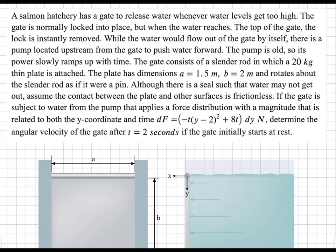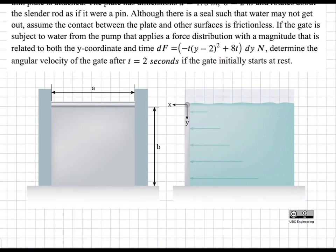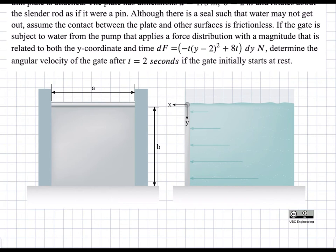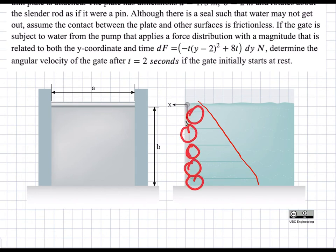The first thing we need to do is understand what is going on. We have a force distribution along the direction of y which changes with distance from the top of the gate to the bottom — the force distribution is not even. It also varies with t, because hydrostatic pressure changes the force based on depth, and the pump changes it with time.